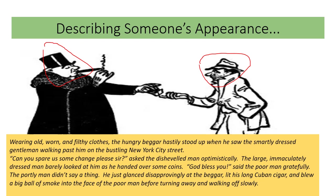Wearing old, worn and filthy clothes, the hungry beggar hastily stood up when he saw the smartly dressed gentleman walking past him on the bustling New York City street. 'Can you spare us some change, please, sir?' asked the dishevelled man optimistically. The large, immaculately dressed man barely looked at him as he handed over some coins. 'God bless you,' said the poor man gratefully. The portly man didn't say a thing. He just glanced disapprovingly at the beggar, lit his long Cuban cigar, and blew a big ball of smoke into the face of the poor man before turning away and walking off slowly.